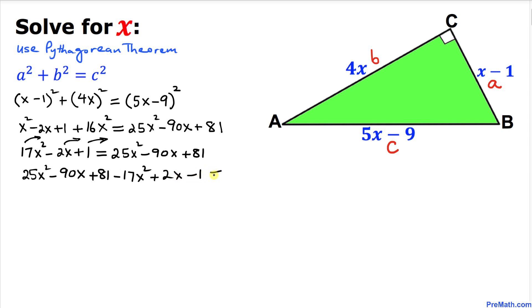Now let's combine the like terms. That is going to give us 8x squared minus 88x plus 80 equals 0.